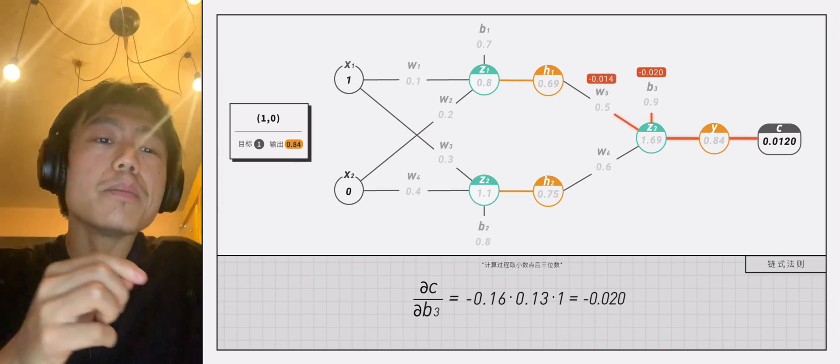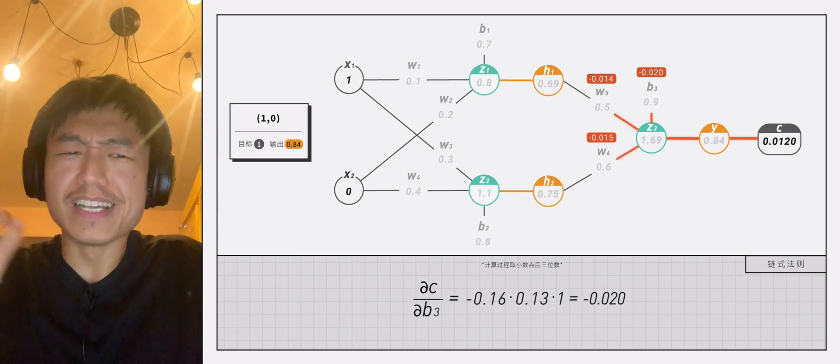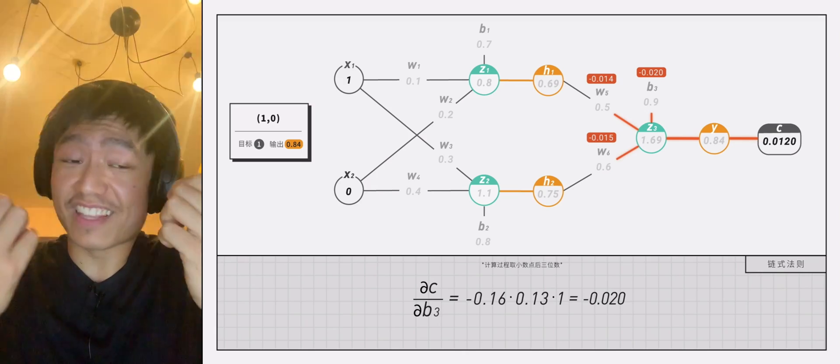Similarly, partial derivative of c to w5 and c to w6 can also be derived in this way.